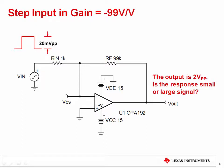Most of the examples discussed thus far have been basic buffer circuits, also called unity gain followers. Now let's look at amplifiers with different closed-loop gains in order to see the effect that closed-loop gain has on output response.